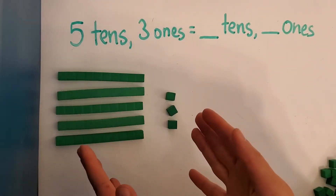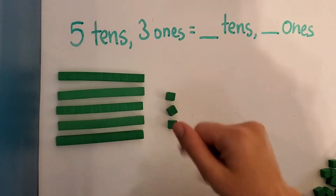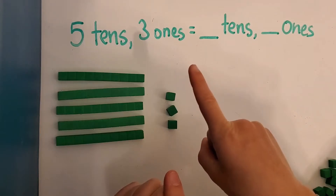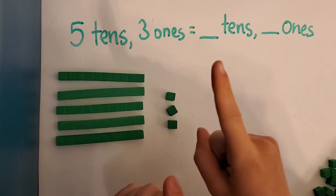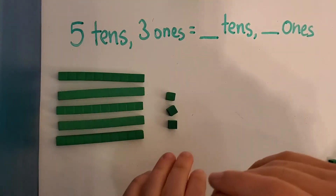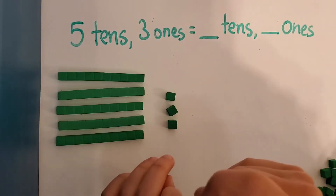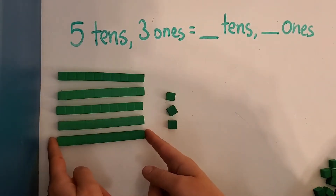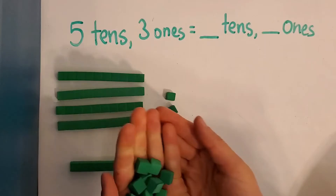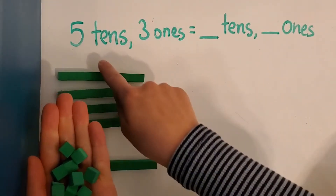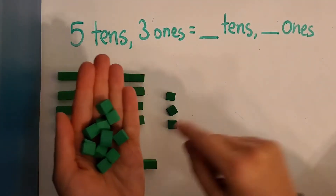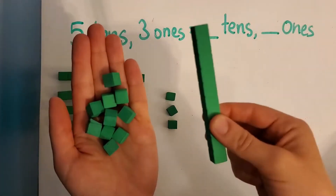So how many tens do we have right now? Five, right? We have five tens. And how many ones units makes up one tens rod? Ten, right? Ten ones equals one ten. So what if we took away this ten rod and replaced it with ten ones? Is five tens equal to four tens and ten ones? Yes, because ten ones is equal to one ten.